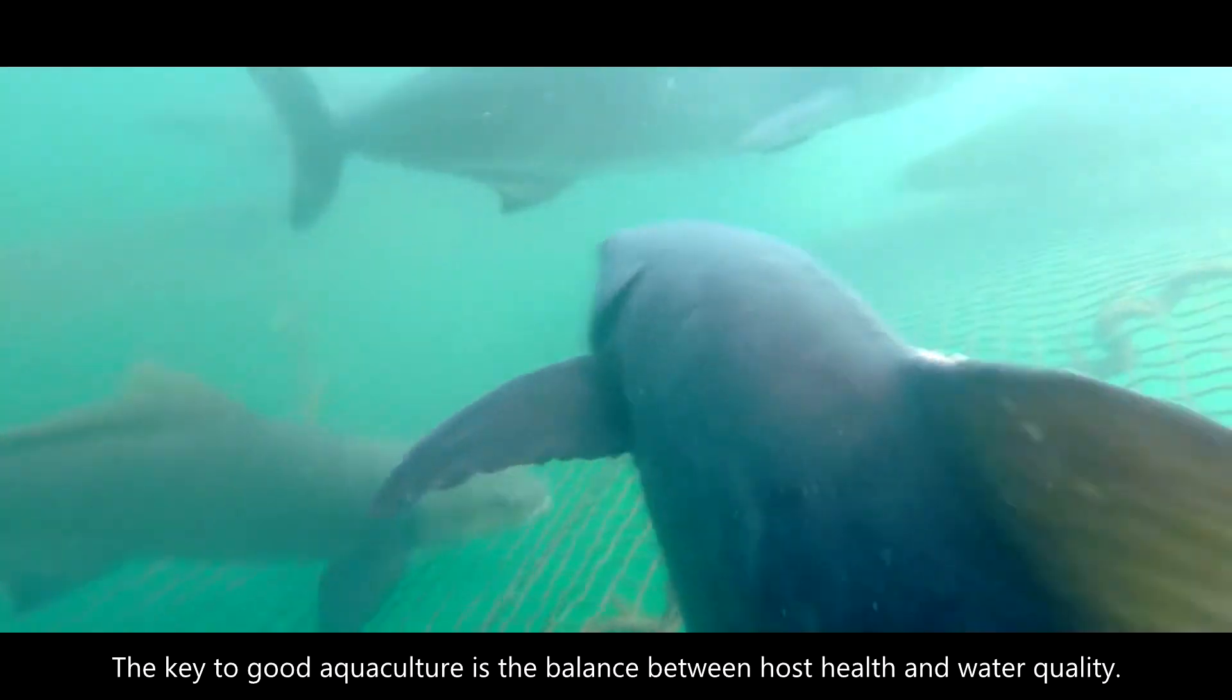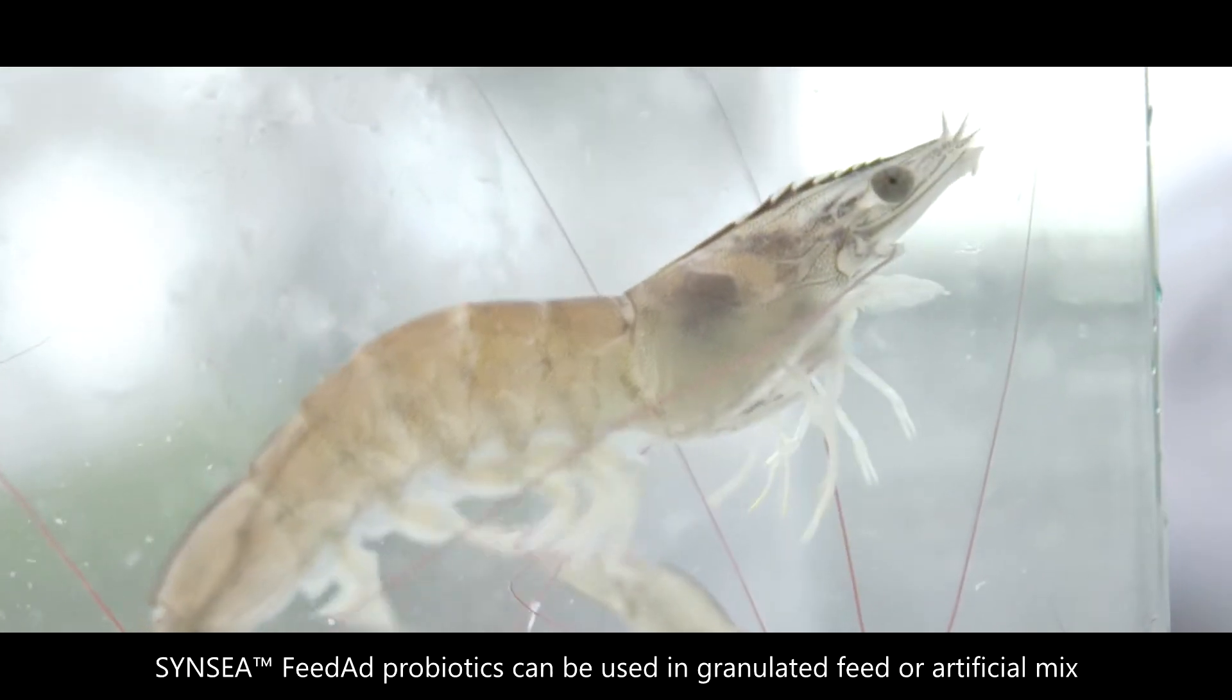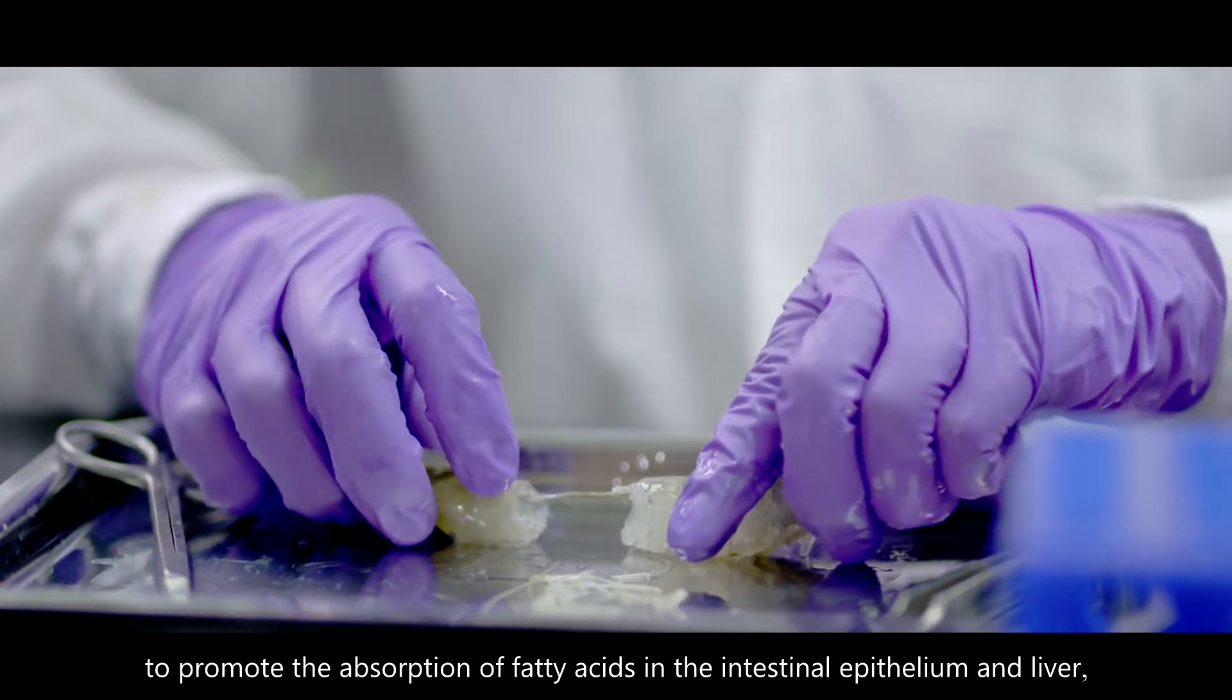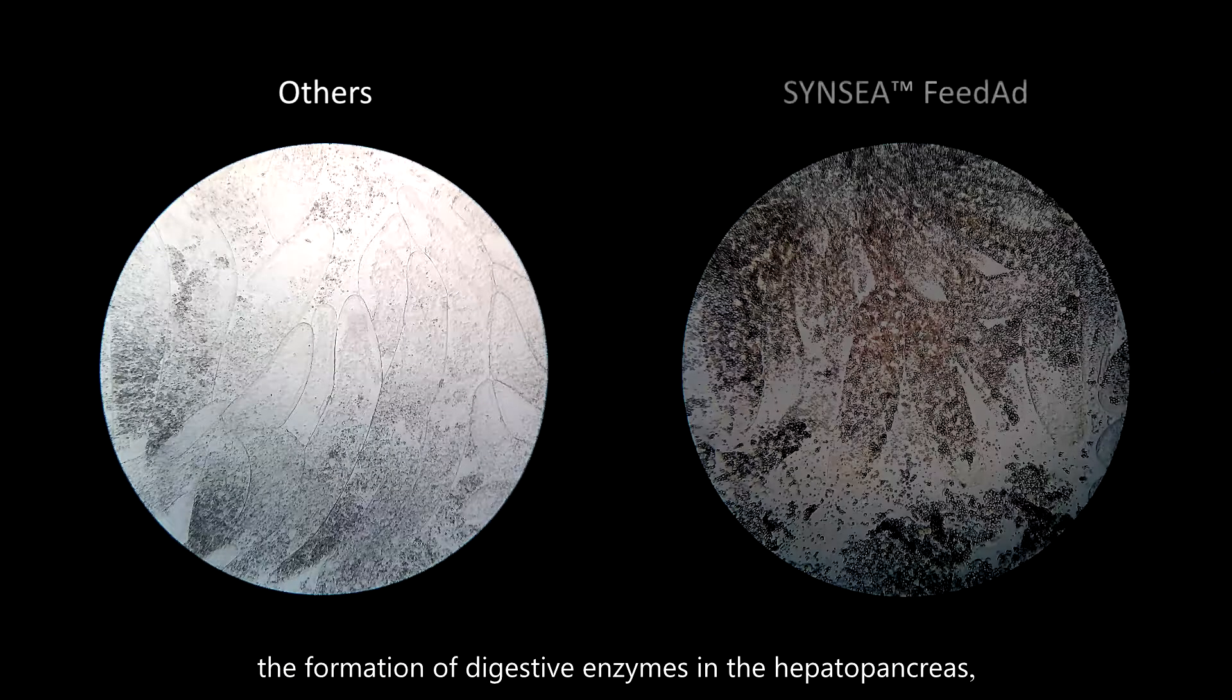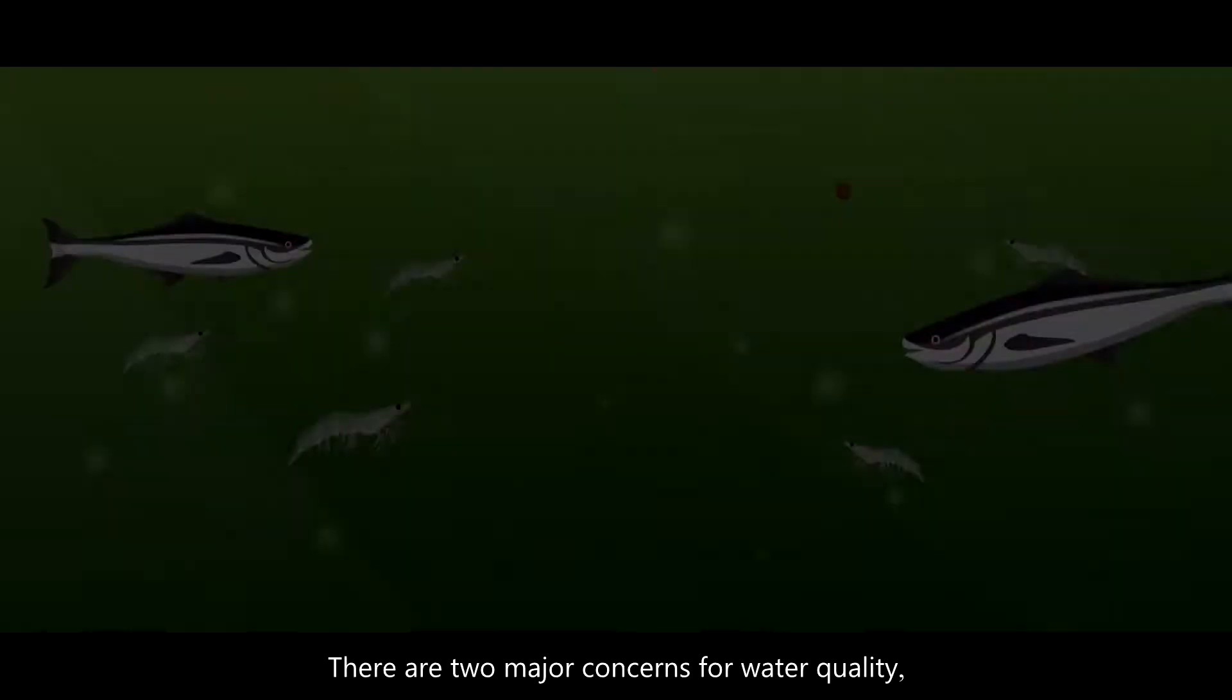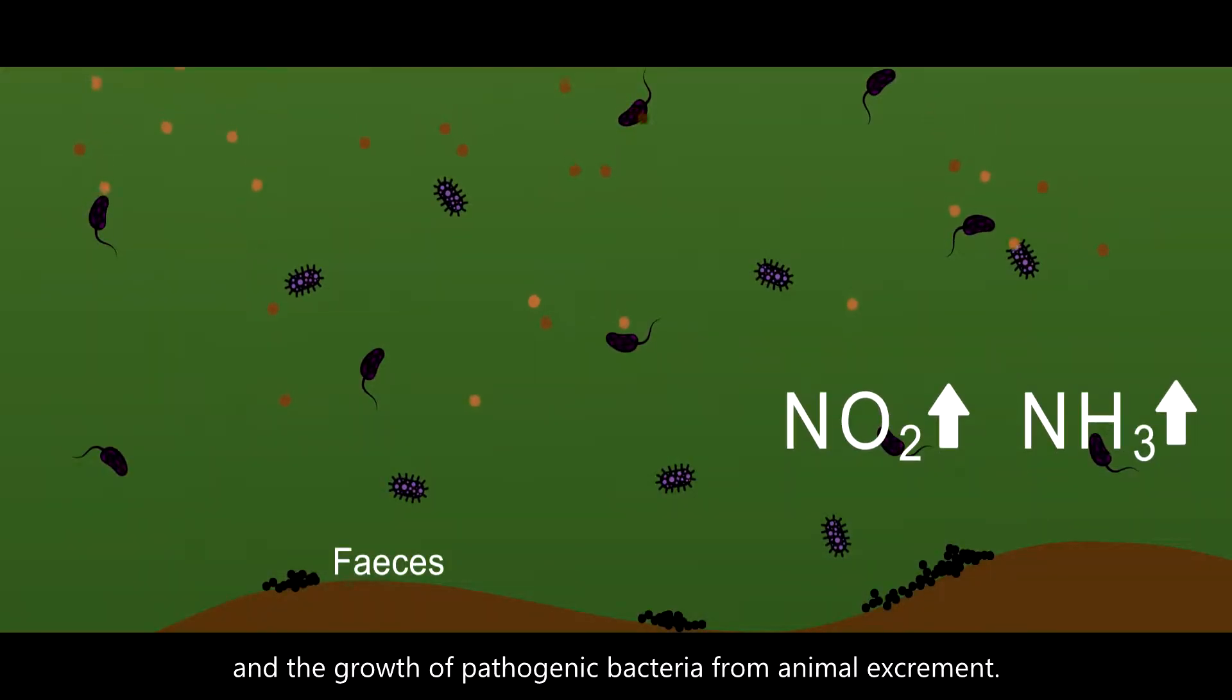The key to good aquaculture is the balance between host health and water quality. Take shrimps as an example. There are two major concerns for water quality: the accumulation of residual feed and the growth of pathogenic bacteria from animal excrement.